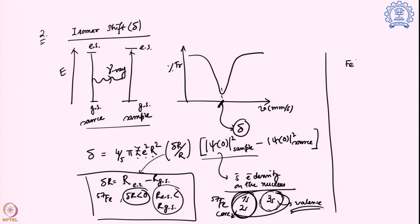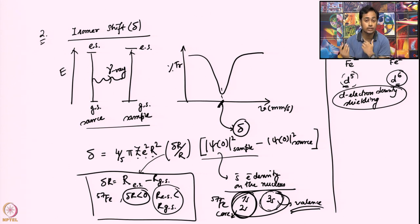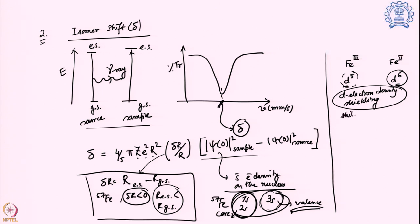The isomer shift varies with oxidation state. Taking Fe³⁺ versus Fe²⁺ as an example: Fe³⁺ is a d⁵ system and Fe²⁺ is a d⁶ system — Fe²⁺ has more d-electrons, Fe³⁺ has fewer. D-electron density affects shielding: d-electrons shield S-electrons from interacting with the nucleus — it is a competition between d and s electrons for nuclear charge. The shielding effect is lower in Fe³⁺ because it has fewer d-electrons, and comparatively higher in Fe²⁺.